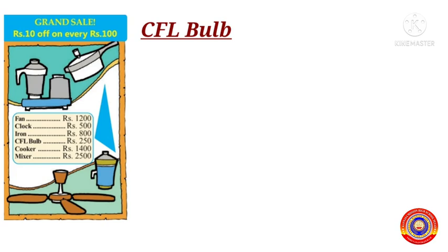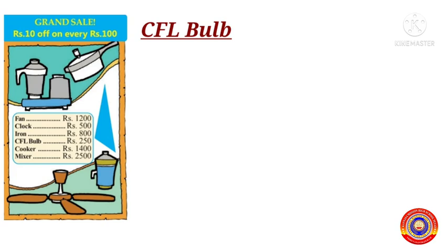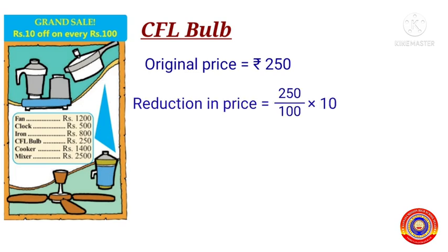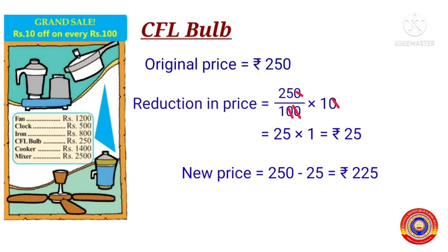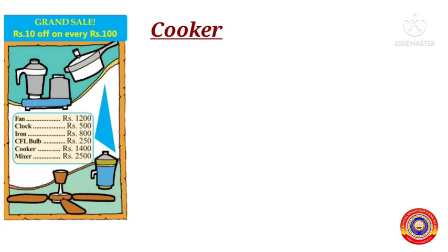Is it clear for you children? Next item is the CFL bulb. The original price of a CFL bulb is equal to 250 rupees. Therefore the reduction in price is equal to 250 ÷ 100 × 10. After cancelling the zeros from both the numerator and the denominator, we get 25 × 1, that is equal to 25. Therefore the new price of a CFL bulb is equal to 250 minus 25, that is equal to 225 rupees.